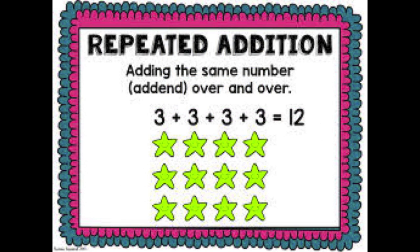A big part of arrays is understanding repeated addition. So what is repeated addition? Repeated addition is just adding the same number over and over. In this example, we have three rows with four in each row, so we're adding the number three, four times: three plus three plus three plus three.